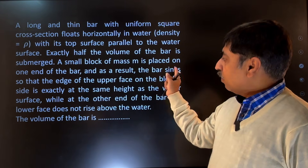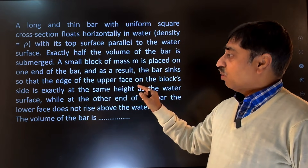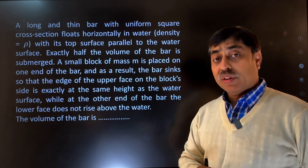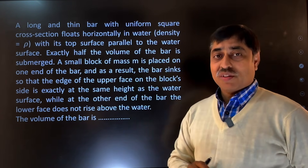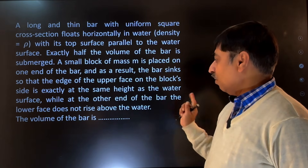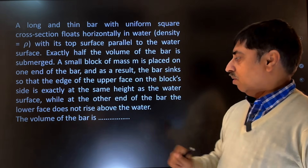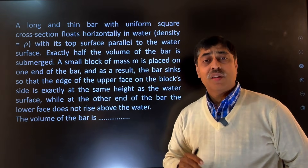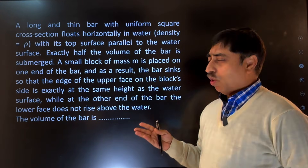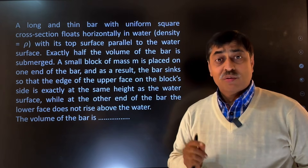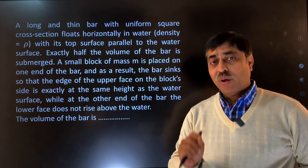Exactly half the volume of the bar is submerged. A small block of mass m is placed on one end of the bar, and as a result the bar sinks so that the edge of the upper face on the block side is exactly at the same height as the water surface, while at the other end the lower face does not rise above the water. What will be the volume of the bar in terms of m and rho?